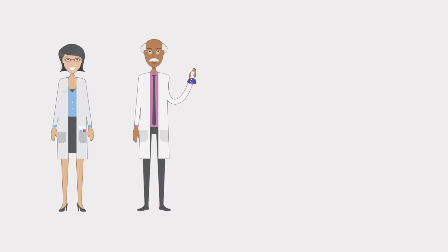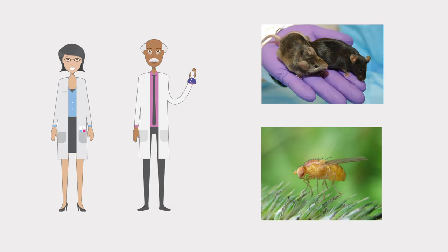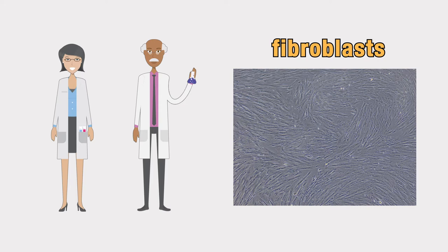The term model can refer to both model organisms, like mice or fruit flies, or it can mean cellular models, where specific types of cells are grown in the lab to be used in various experiments.